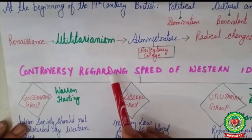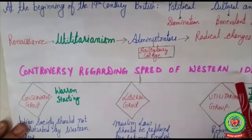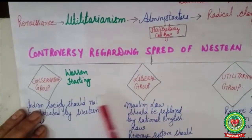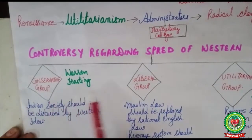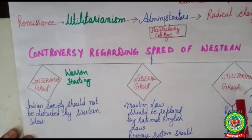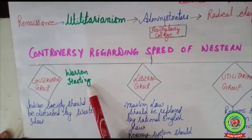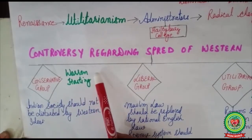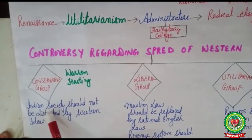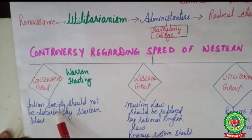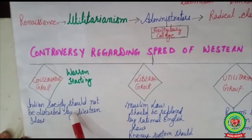There was a controversy regarding whether to spread western ideas in India or not. There were three schools of thought: the conservative group, the liberal group, and the utilitarian group. The conservative group was led by Warren Hastings, who served India as Governor General. He believed that Indian society should not be disturbed by western or alien ideas and the government should follow the policy of benevolent neutrality.